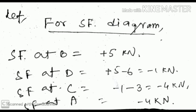SF at A is equal to minus 4 kilo newtons. This way we can find out all the shear force values. Now let's move on to the bending moment diagram.